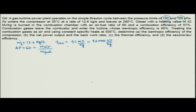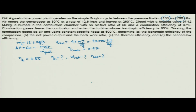Combustion efficiency is 97 percent. Combustion gases leave the combustor and enter the turbine whose isentropic efficiency is 85 percent. We treat combustion gases as air with constant specific heats at 500 degree centigrade. We need to find the compressor isentropic efficiency, net power output, back work ratio, thermal efficiency, and second law efficiency.